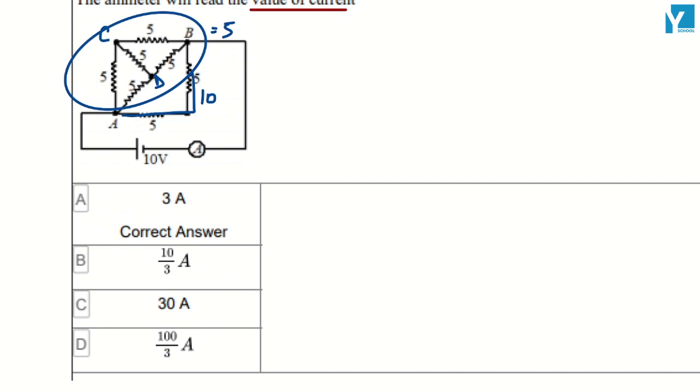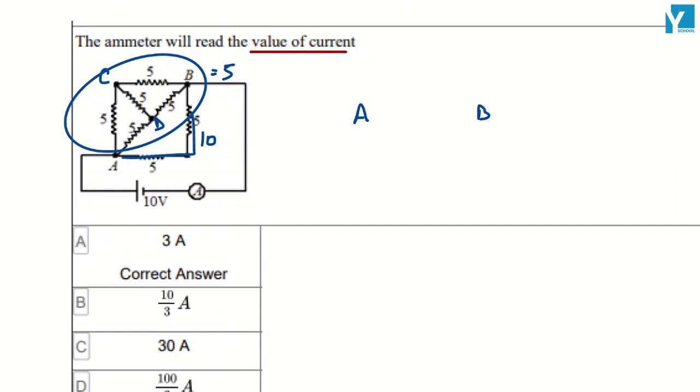Okay, so here you have A and B, just two resistances. One is 5 ohms resistance, the other is 10 ohms resistance.